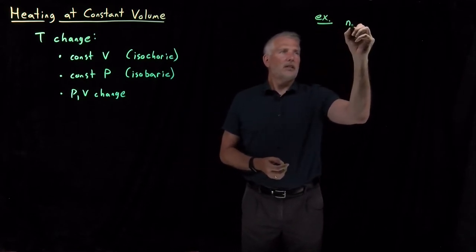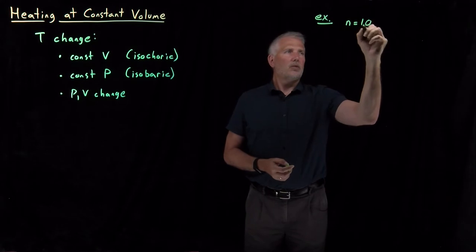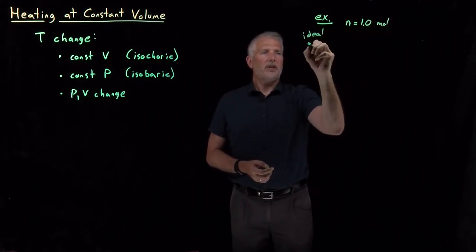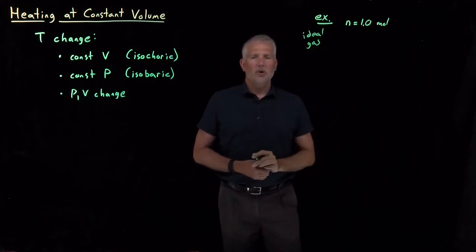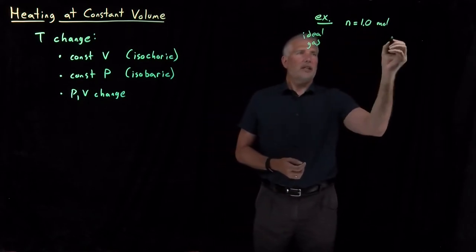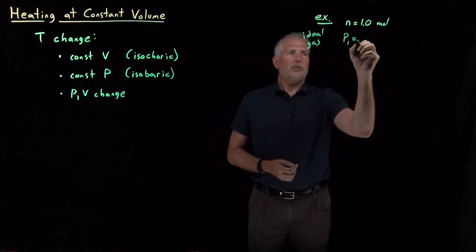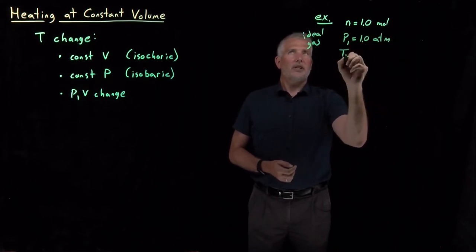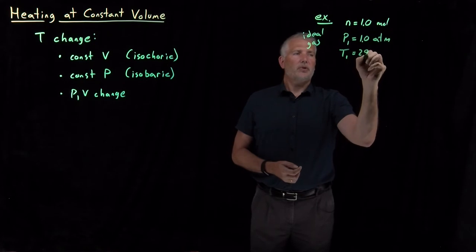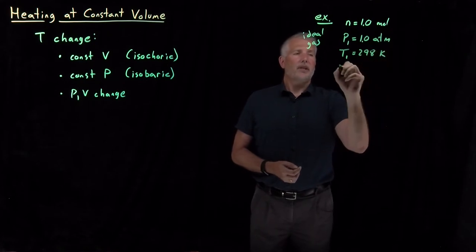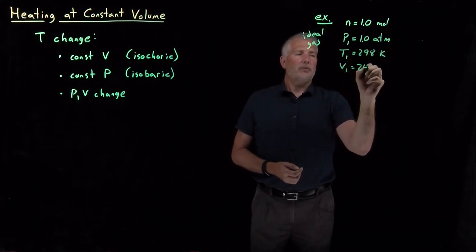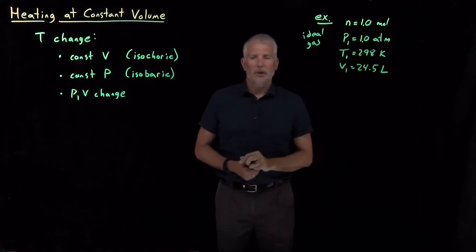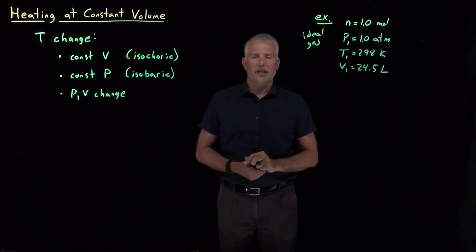Let's take one mole, so we'll do this as usual for an ideal gas. Let's take one mole of an ideal gas initially at a pressure of one atmosphere and a temperature of 298 Kelvin. So that means its initial volume, if it's an ideal gas, is going to have to be 24.5 liters. So those numbers together all obey PV equals nRT, if you want to double-check that.